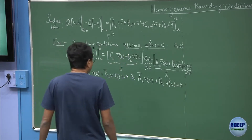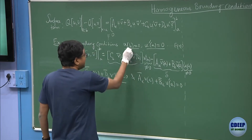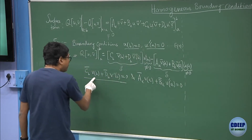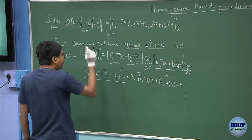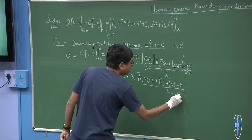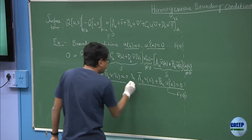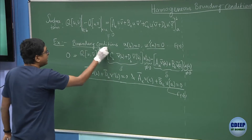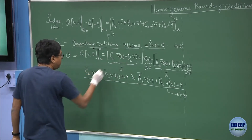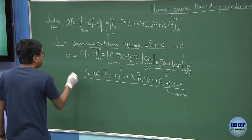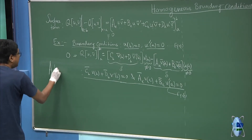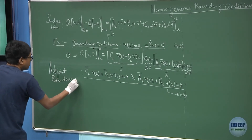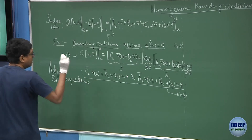So I am forced to conclude — and you can remove the complex conjugation — that c̄(b)·v(b) + d·v′(b) = 0, and ā(a)·v(a) + b̄·v′(a) = 0. Now observe: I started with boundary conditions on u, and I ended up getting boundary conditions on the v function. These are going to be called the adjoint boundary conditions.